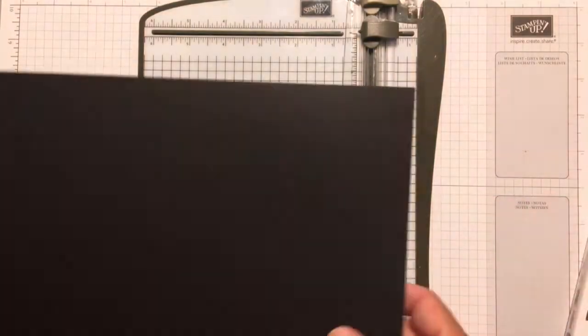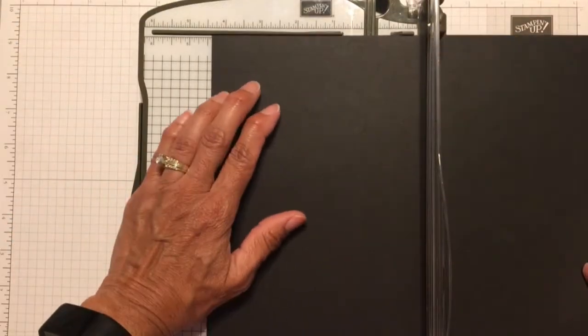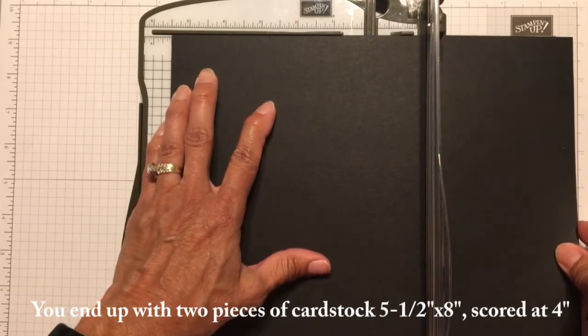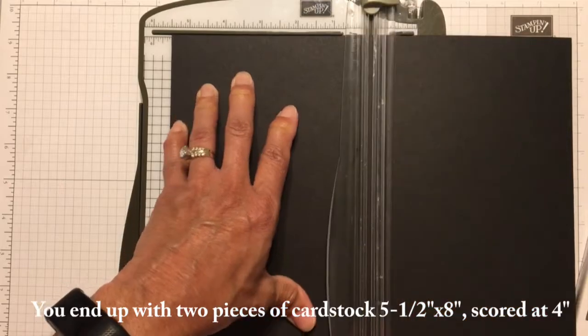So I'm going to grab my paper trimmer, and I'm going to take my 8.5x11 piece of cardstock and cut it in half at 5.5 inches.